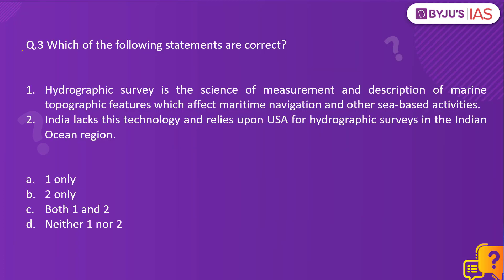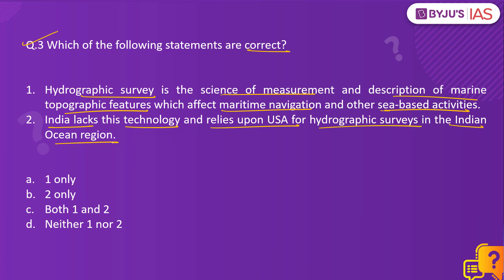Let's look at the third question. Which of the following statements are correct? Hydrographic survey is the science of measurement and description of marine topographic features which affect maritime navigation and other sea-based activities. India lacks this technology and relies upon the United States for hydrographic surveys in the Indian Ocean region. Amongst the given statements, the second statement is incorrect, so option A is the right answer.